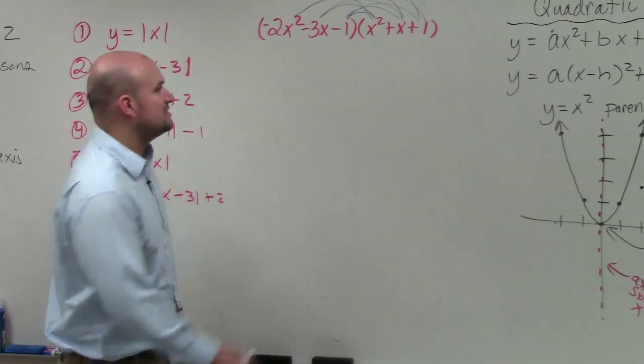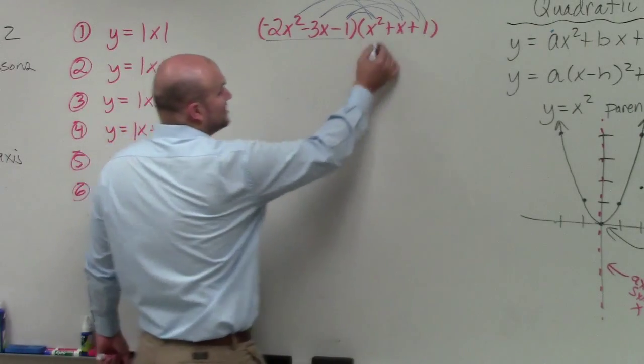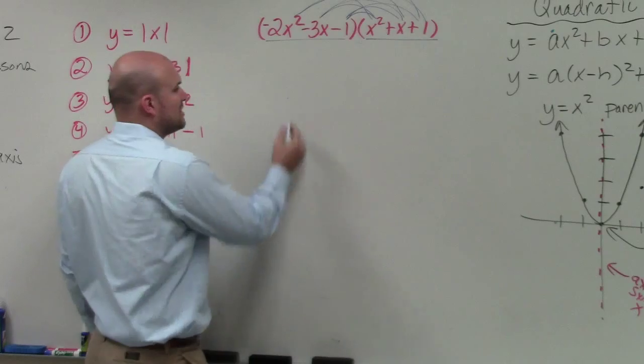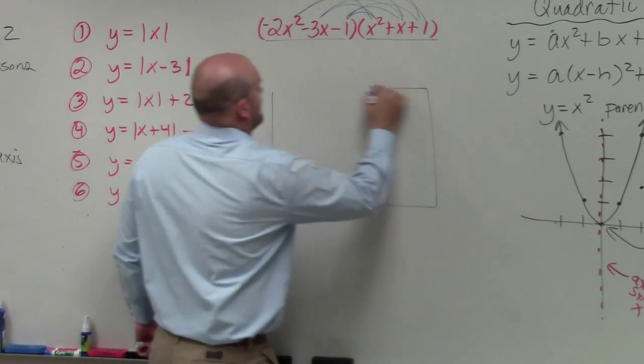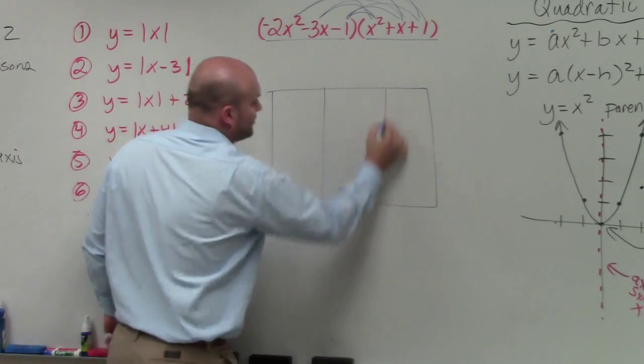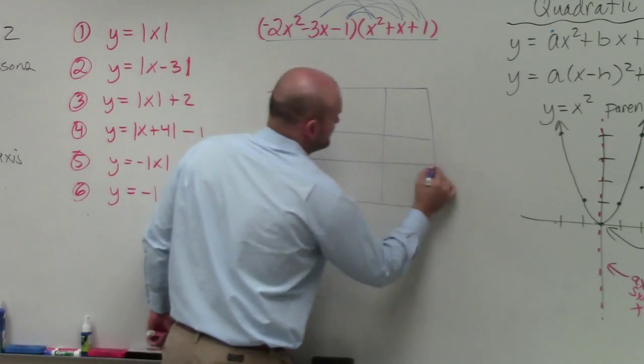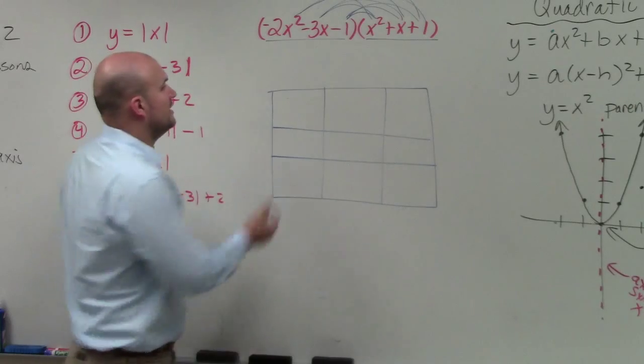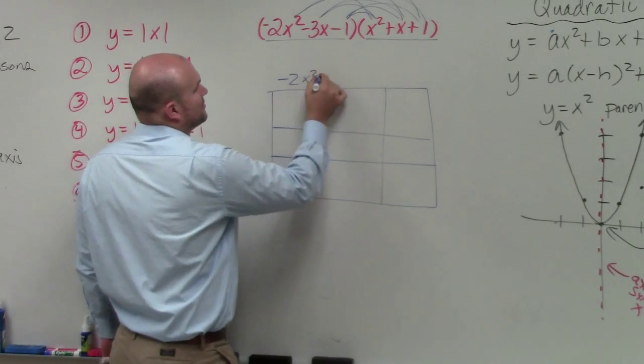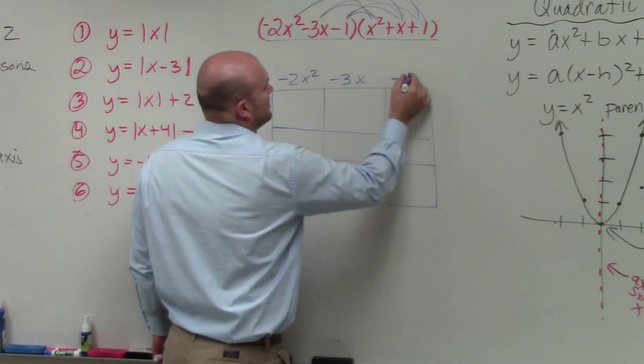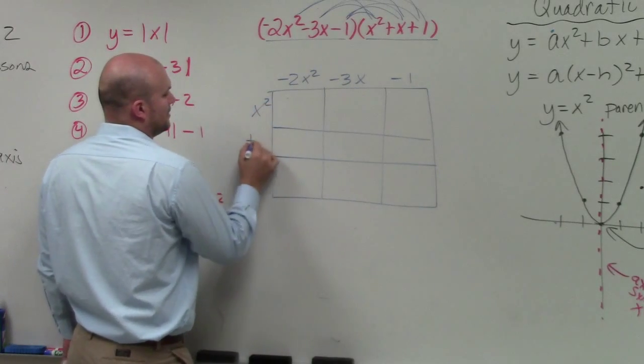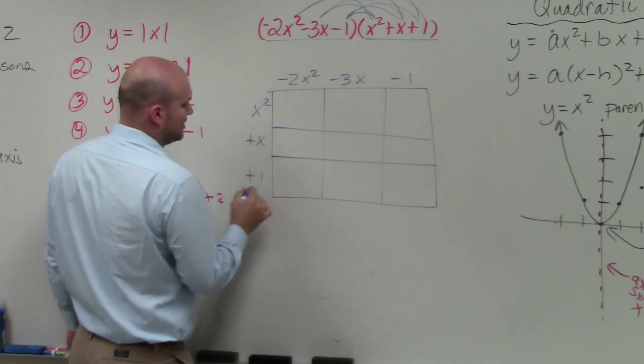Where what we can do is if we organize this, notice I have three terms times three terms in each expression. So when I create my box, I'm just going to make sure I have three columns and then three rows. Then I'll just take one and say this will be 2x squared minus 3x minus 1. And then this will be x squared plus x plus 1.